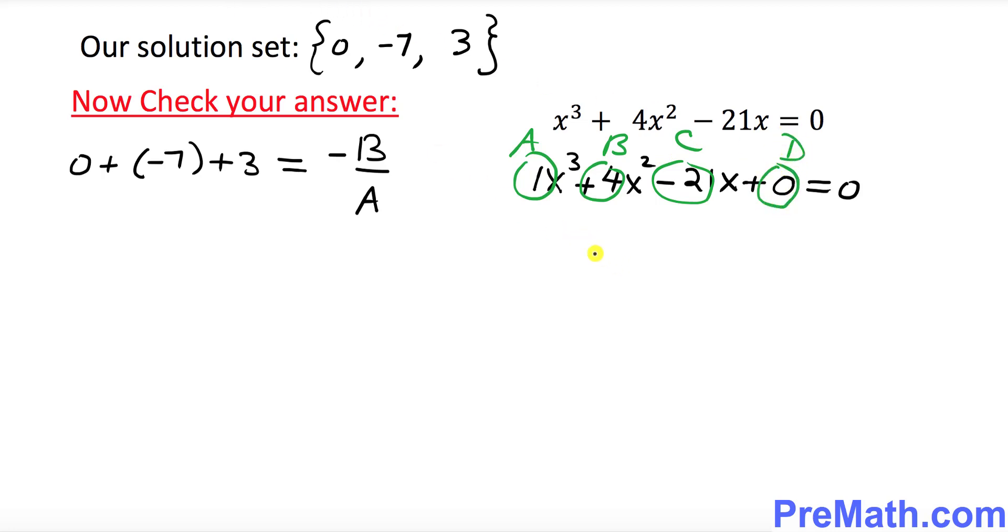So that means minus b over a in this case is going to be minus b, and b is positive 4, over a which is 1. That's going to give you negative 4. So that means minus b over a turns out to be negative 4.